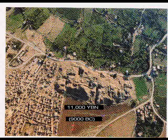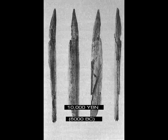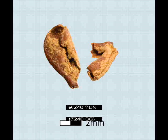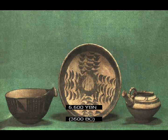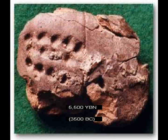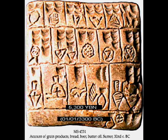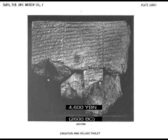Rice grown. First city. Bow and arrows. Wheat grown. Squash grown. The wheel. Writing — cuneiform tablets. First numbers. Animal-pulled vehicles. Symbols of the alphabet. Written story.